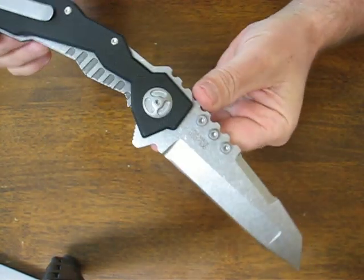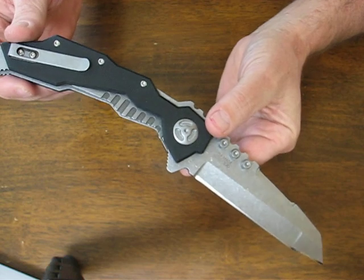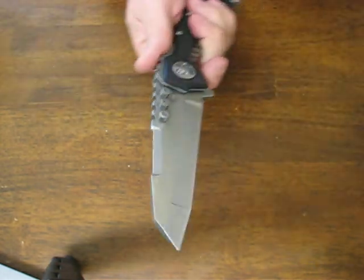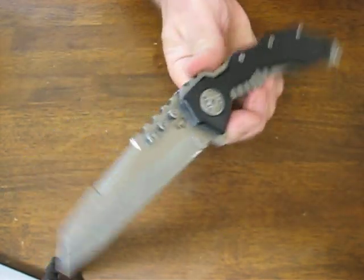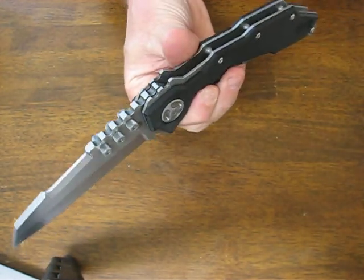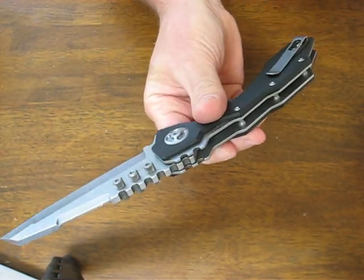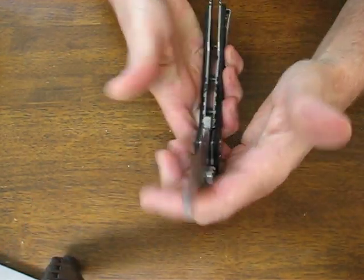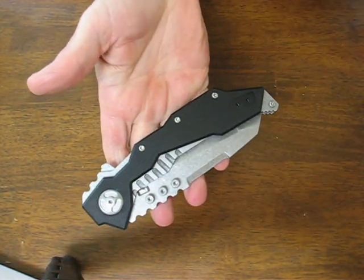The overall length on it when it's open measures in at 11 inches and it's entirely made in the U.S. You can buy these. They're a limited run. They're only making 300 of them at osograndeknives.com. We thank you for watching and please stay tuned for more knife reviews.